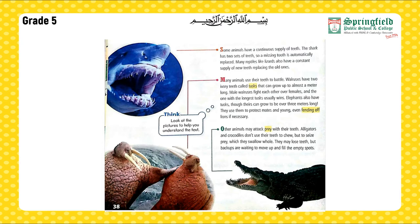Other animals may attack prey with their teeth. Alligators and crocodiles don't use their teeth to chew, but to seize prey, which they swallow whole. They may lose teeth, but backups are waiting to move up and fill the empty spots.